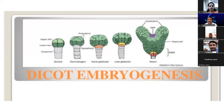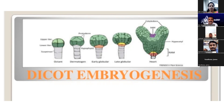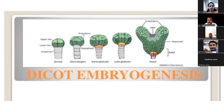The first division of the microspore gives rise to — vegetative and generative cells, two secondary cells, or two collagen cells? The first division of the microspore gives rise to a vegetative and generative cell. Also, the transfer of microspores from microsporangium to the stigma is known as pollination.